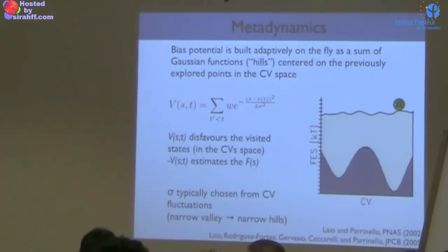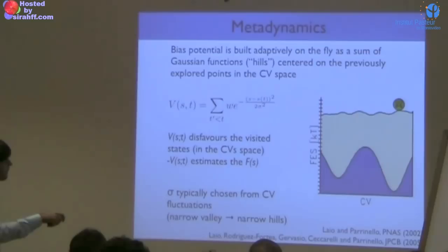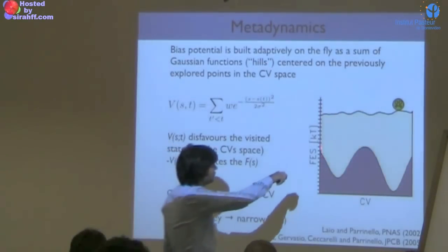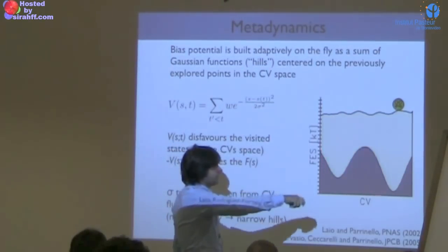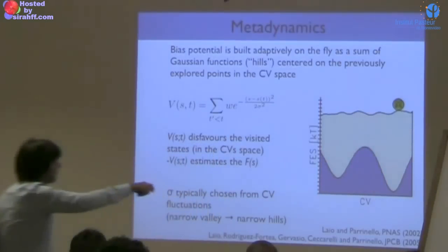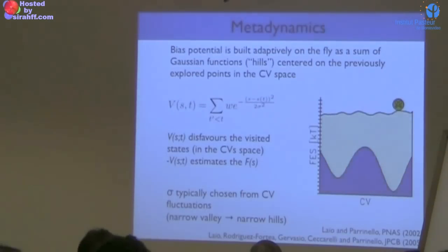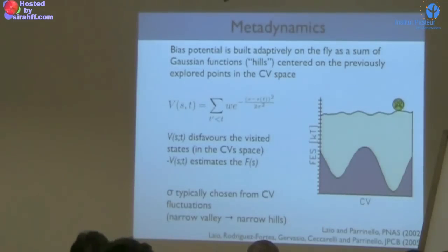The aim is to build something such that the upper line — free energy plus bias — is completely flat, even if in practice you cannot know when it's flat because you don't know the underlying free energy. You only know the shape of the bias, but you have a procedure that automatically makes this line try to become flat. Methods of this class are called flat histogram methods.